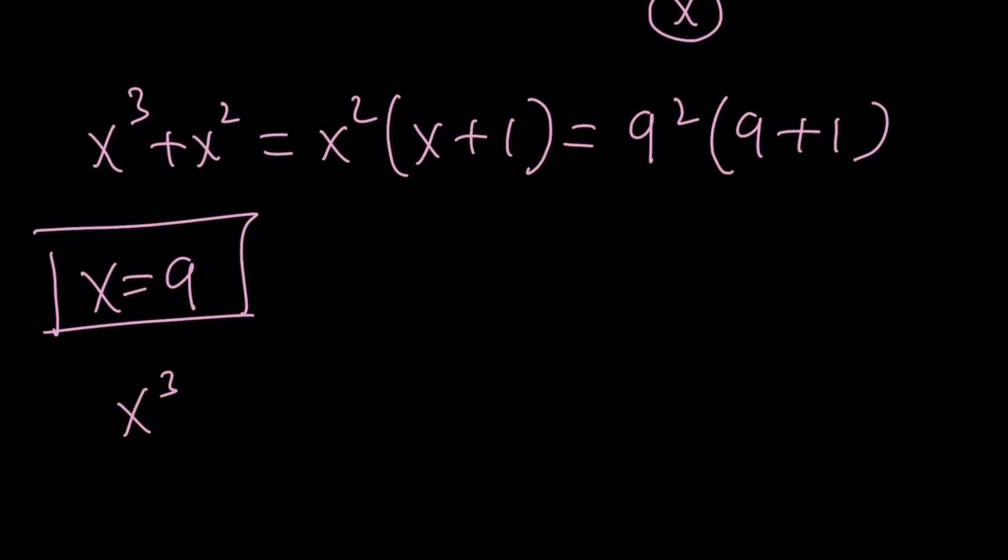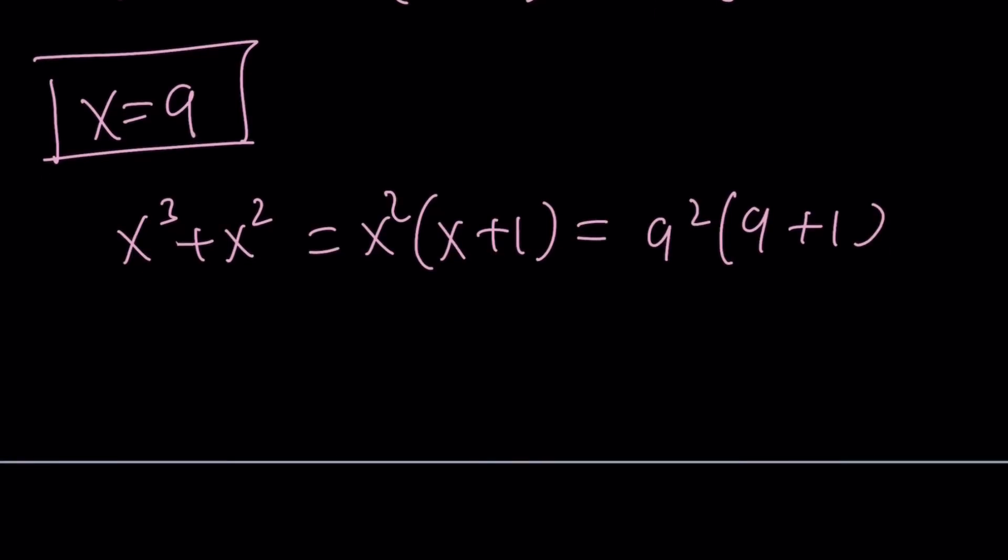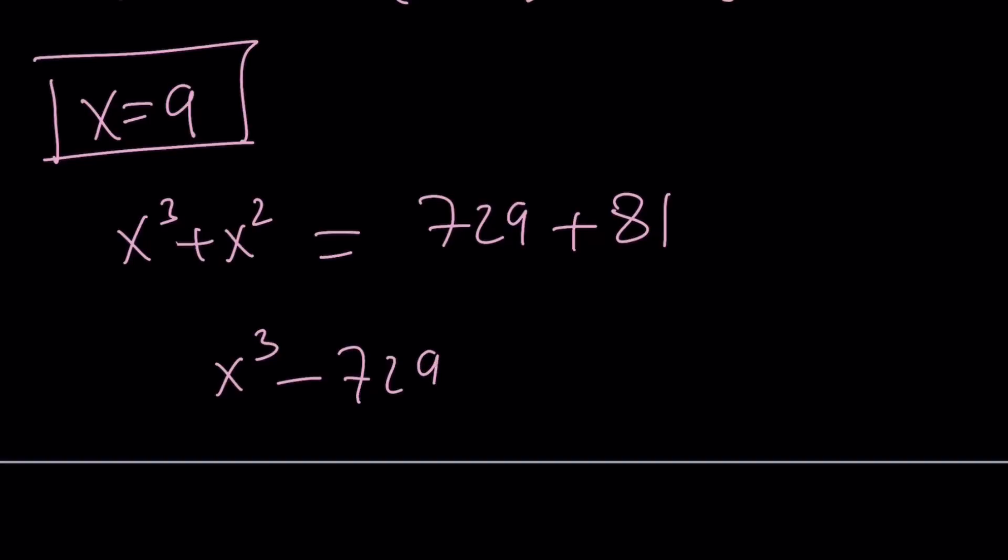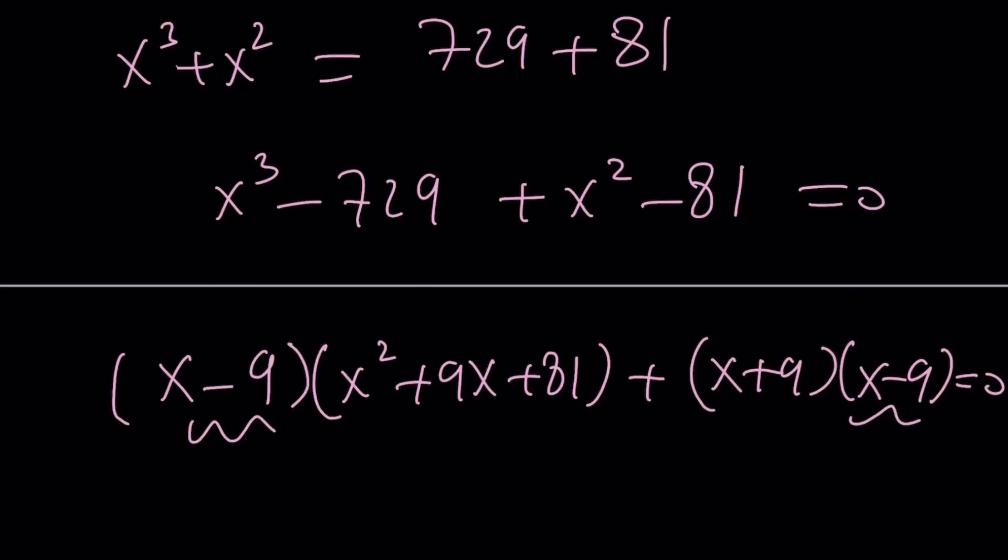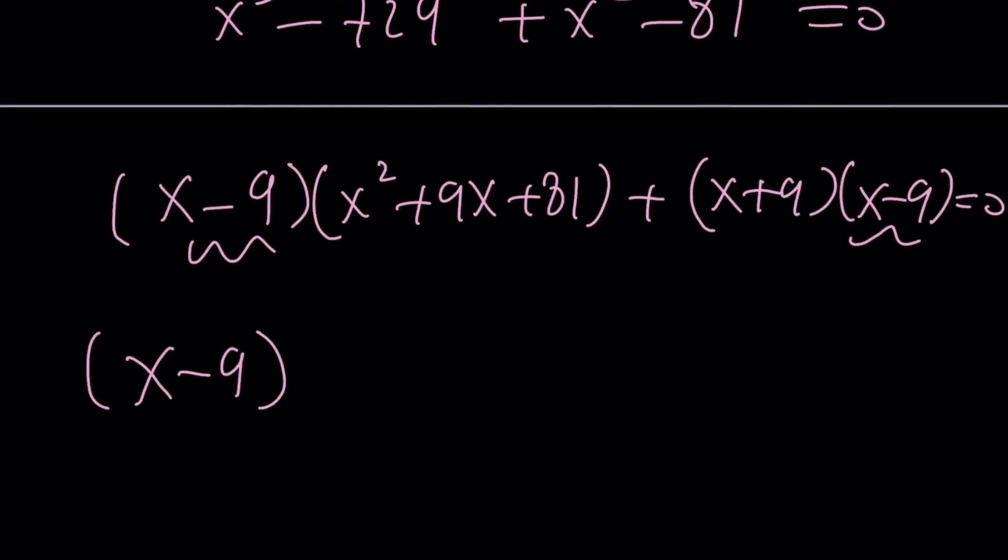Now we have x cubed plus x squared equals x squared times x plus 1, and that is 9 squared times 9 plus 1. So x equals 9 works, but that's just one of the solutions. I'm going to write it as x cubed minus 729 plus x squared minus 81 equals 0. Now I get difference of 2 cubes from here, and then difference of 2 squares. x minus 9 obviously is a common factor because x equals 9 is a solution, and then we get x squared plus 10x plus 90 equals 0.